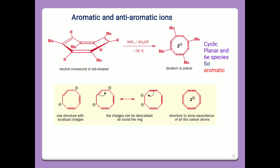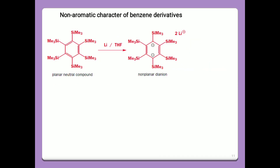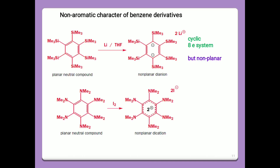One structure with localized charges can be delocalized all around the ring, showing that all carbon atoms are equivalent. Regarding non-aromatic character of benzene derivatives: if the planar neutral compound undergoes reduction, it converts into a non-planar dianion compound — cyclic and an 8-electron system but non-planar. Another benzene derivative's planar neutral compound converts into a non-planar dication — a cyclic 4-electron system but non-planar.